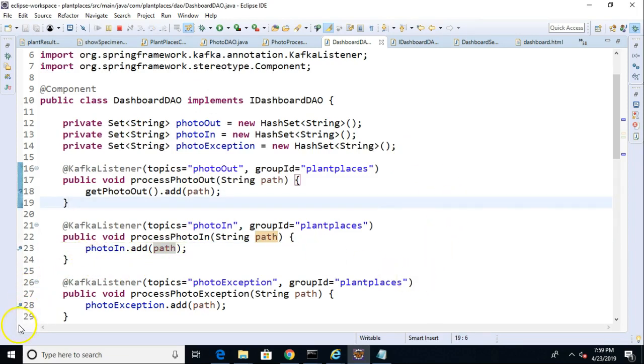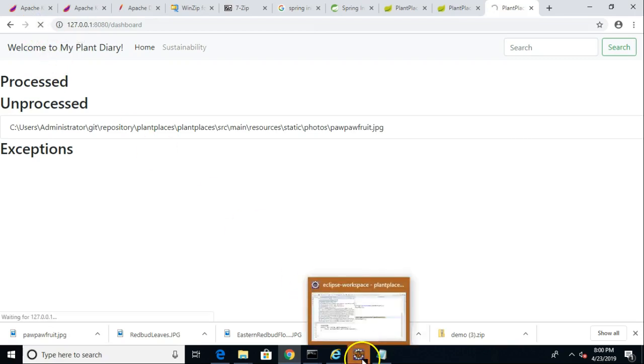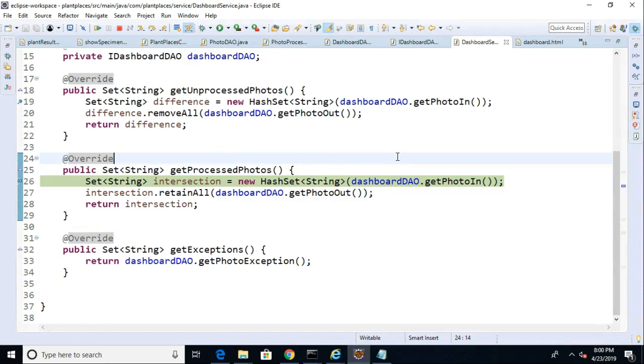Let's go back and look at our dashboard. I paused the video and cleared out what was there before just so that we could have a fresh view of this. Take a look. You see that pawpaw fruit, which I just uploaded, is sitting here in unprocessed. Now allow me to refresh, and we're going to see a breakpoint hits. So I go back, and here's where we're doing that intersection and difference math.